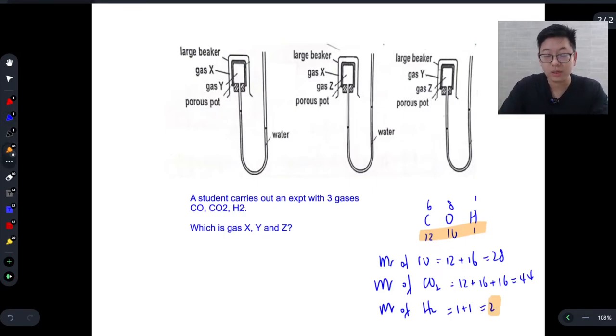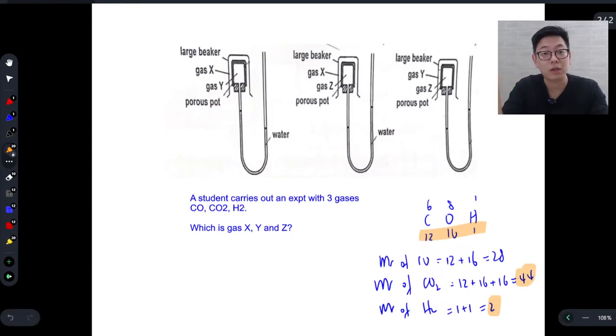The MR of hydrogen gas is 1 and 1 and that gives us 2. So in this case, hydrogen has the smallest MR, it will diffuse the fastest. Carbon dioxide has the highest, it will diffuse the slowest.